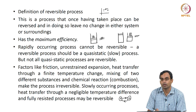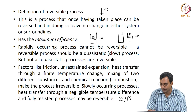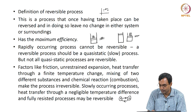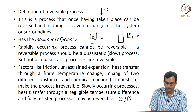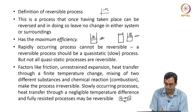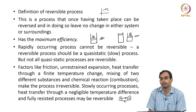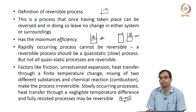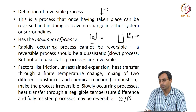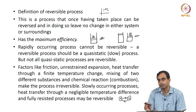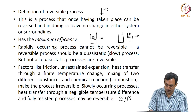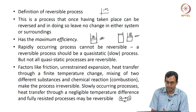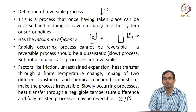In order to have reversible processes, we need slowly occurring processes so that they are quasi-static. If there is any heat transfer, it should be through a negligible temperature difference. Ideally, we would like isothermal heat transfer, or any temperature difference will be so small that it is mostly reversible, and the processes should be fully resisted.